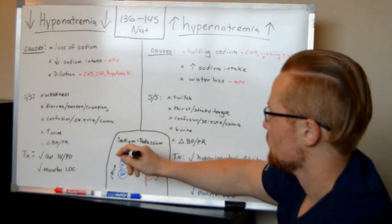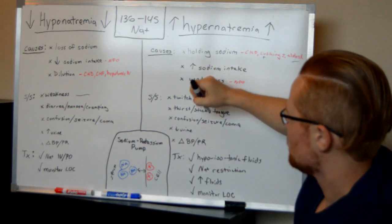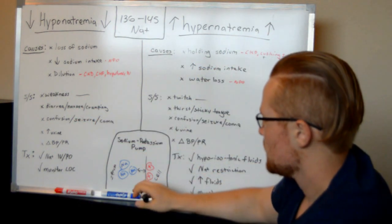So now let's talk about signs and symptoms. So here's the big difference here. Hypo causes weakness and hyper causes twitching. This has to do with the sodium potassium pump.